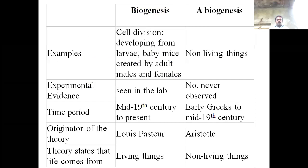Difference between Biogenesis and Abiogenesis: In Biogenesis, cell division develops from larvae, and baby mice are created by adult male and female mice. In Abiogenesis, life arises from non-living things. Experimental evidence is seen in the laboratory for Biogenesis, but no experiment is observed for Abiogenesis. The time period for Biogenesis is mid-19th century to present; Abiogenesis is prior to mid-19th century. Biogenesis theory was proposed by Louis Pasteur; Abiogenesis is associated with Aristotle.